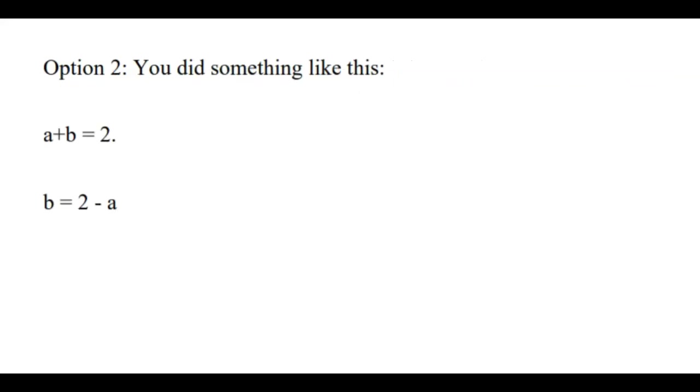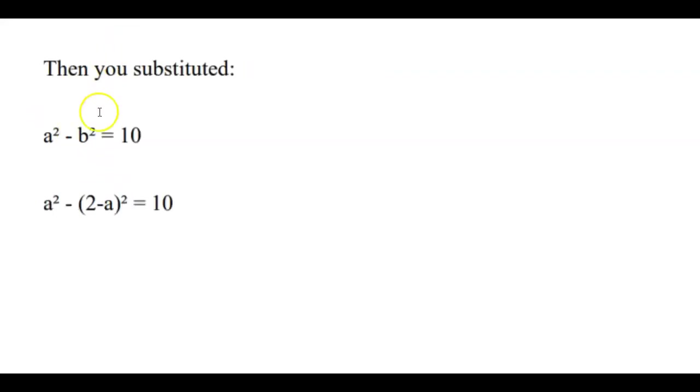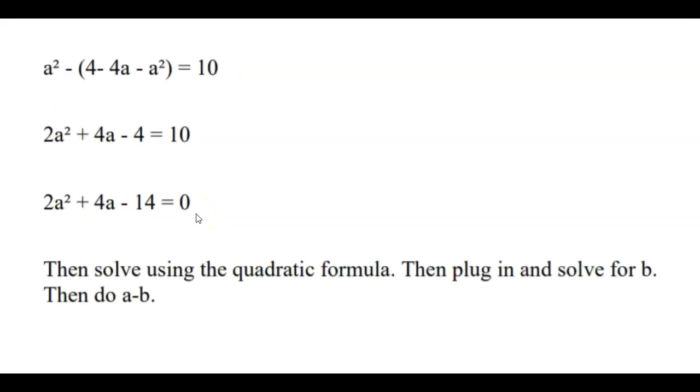Now option two would be that you tried what you would have learned how to do in your school algebra class. You start with the simpler equation, a + b = 2, you solve for b, you get b = 2 - a. Then you're going to replace b in the other equation. a² - b² = 10 becomes a² - (2 - a)² = 10. Then we algebraically simplify that a lot, and then after you do all this, you use the quadratic formula.